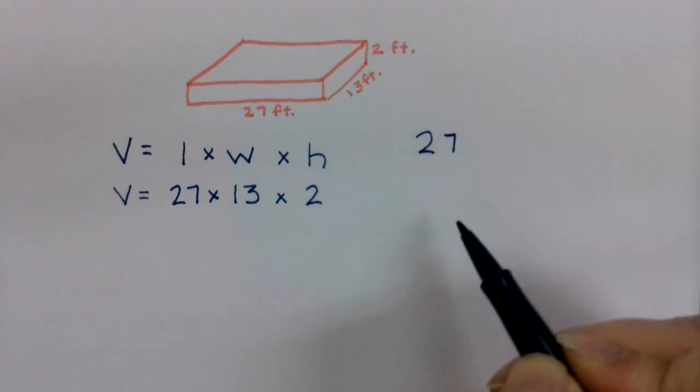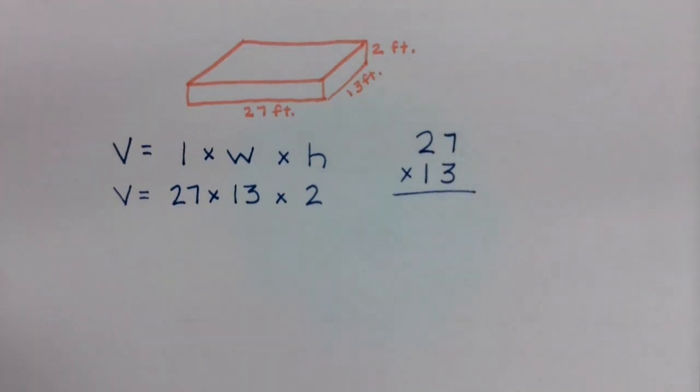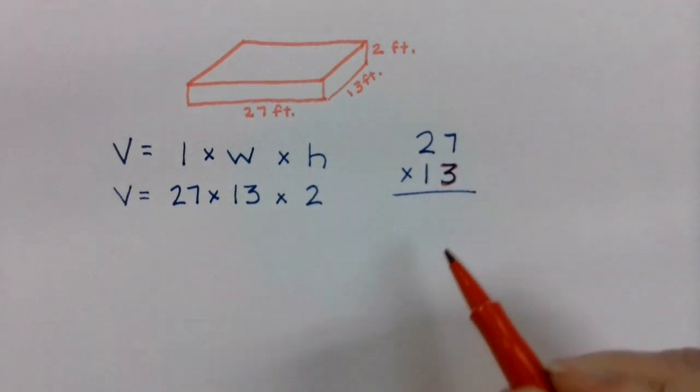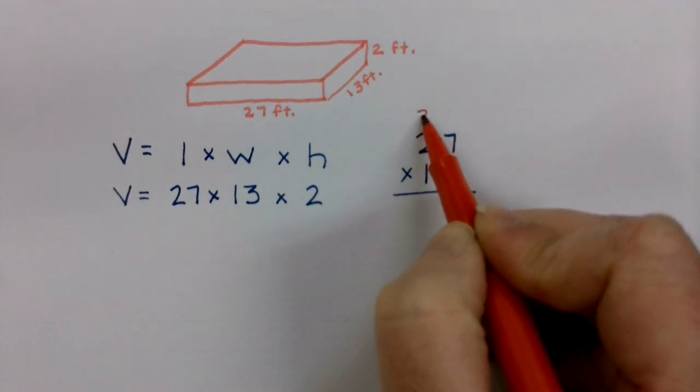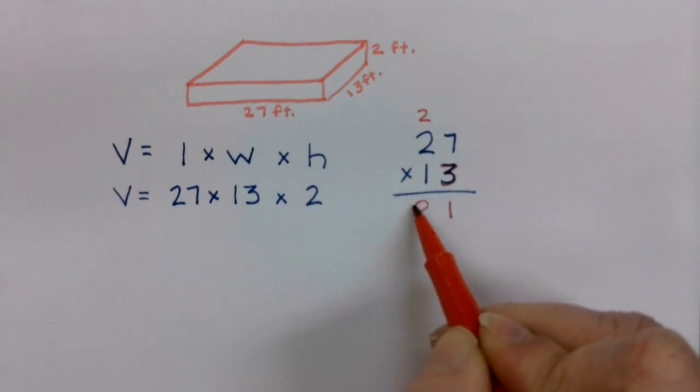I am going to start by finding what will be just that very bottom layer by taking 27 and multiplying by 13. I'm going to start with this 3 right here. 3 times 7 is 21. Here's my 1, here's my 2. 3 times 2 is 6, plus 2 more is 8.